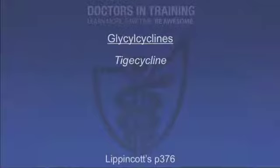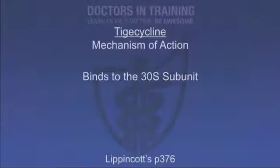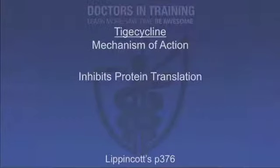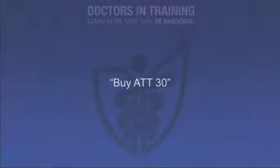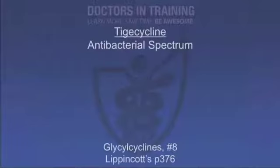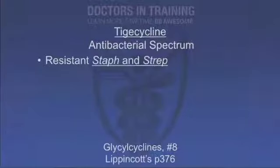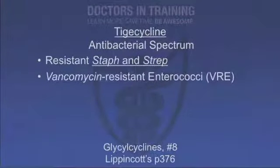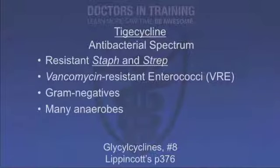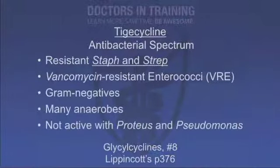The next topic is glycylcyclines, specifically tigecycline. It is bacteriostatic, binds to the 30S ribosome subunit, and inhibits protein translation — another T in our 'buy at 30' mnemonic. It has an expanded broad-spectrum coverage and was developed to overcome tetracycline resistances. It is used for resistant staph and strep infections, vancomycin-resistant enterococci, gram-negatives, and many anaerobes. Of note, it is not very active against Proteus and Pseudomonas.